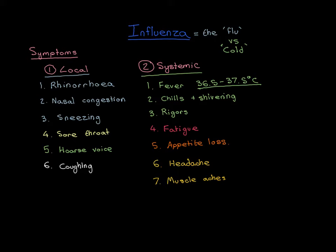The respiratory tract is not lined by a single type of epithelium. Along different parts of its length it is lined by different types of epithelium, and this is actually quite important because certain types of epithelium the influenza virus will be able to infect, and other types it will not. By understanding this, we can understand why certain portions of the respiratory tract are infected by these viruses and others are not.